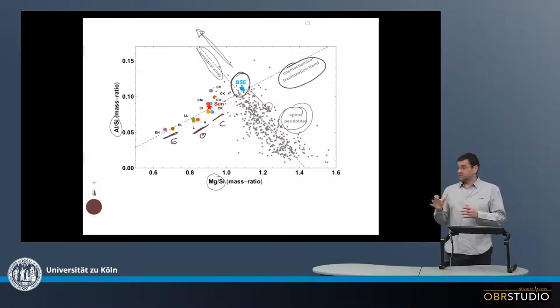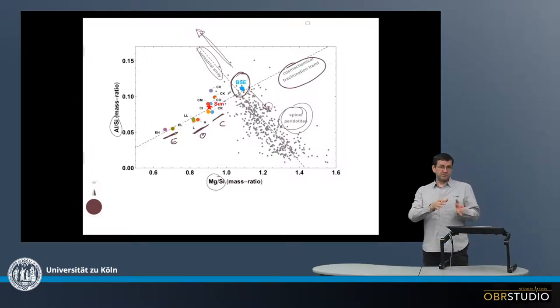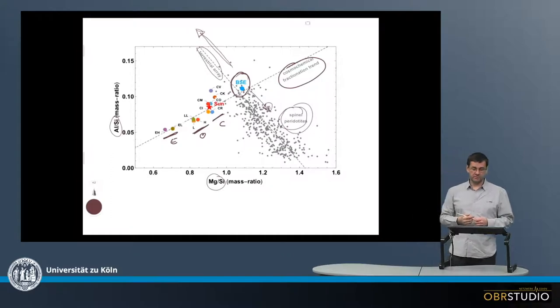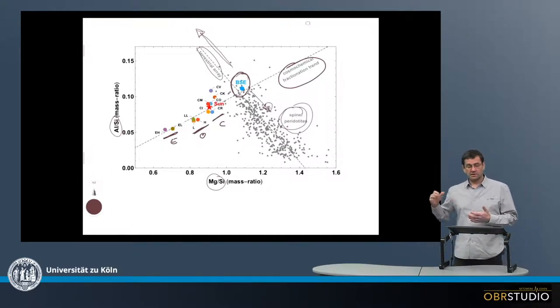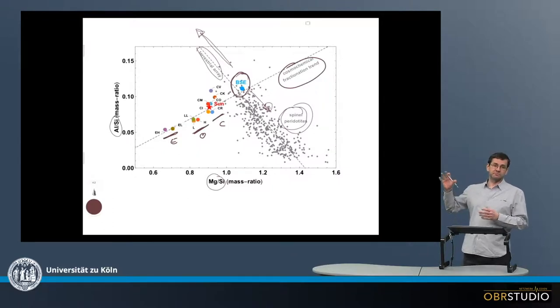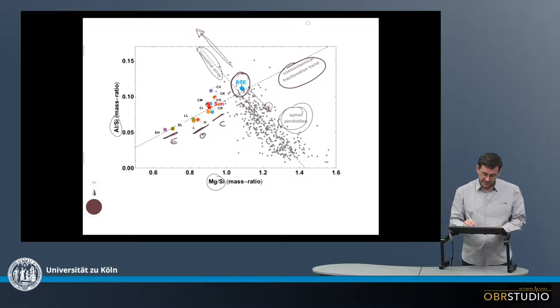So one of the first questions here in relation to meteorites and Earth is why there is this difference. Because it appears that Earth is the only material that has a higher magnesium-silicon ratio than all the other meteorites.